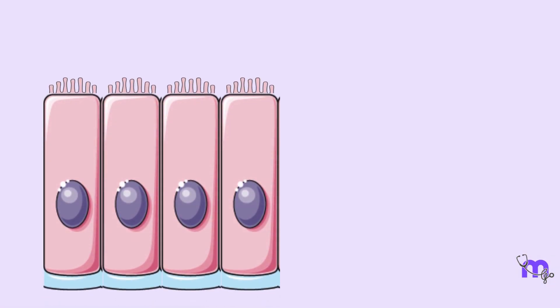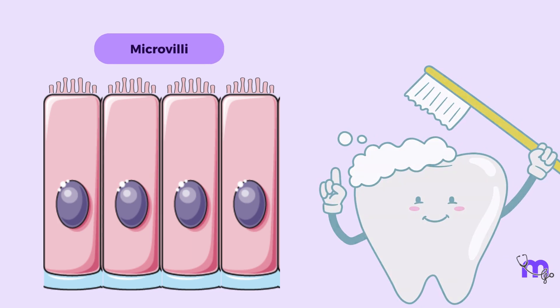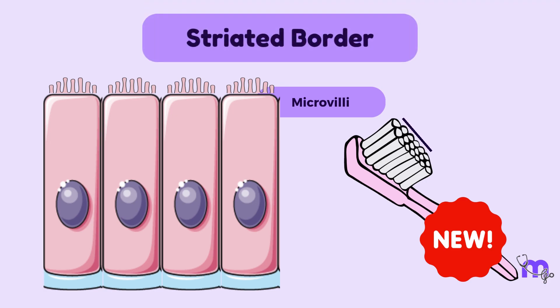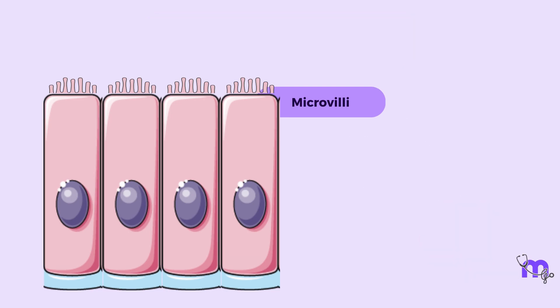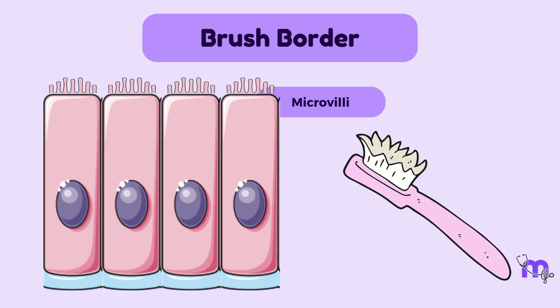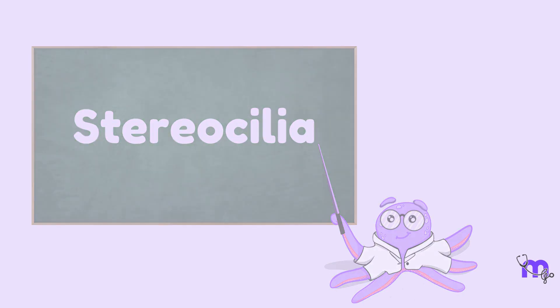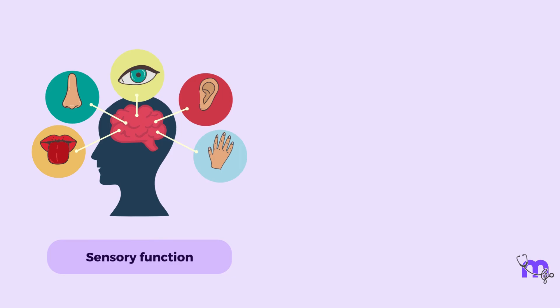Other than cilia, columnar cells may also have microvilli on their surface which can be compared to a toothbrush. When it is new, the bristles of the toothbrush are neatly and uniformly arranged and this is called a striated border of the columnar epithelium. If arranged haphazardly like the bristles of an overused toothbrush, it is called the brush border of the columnar epithelium. Another special structure seen on the surface of the columnar cells is stereocilia which are involved in sensory function as seen in the inner ear.